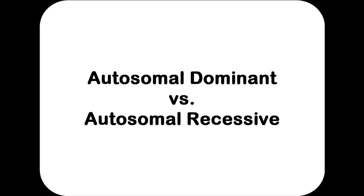In autosomal dominant disorders, the disorder tends to show up in previous generations because a dominant allele causes it. If nobody in the family before you had it, the only other explanation is a mutation, making you the first generation in your family with that disorder. You might think dominant disorders would affect almost everyone, but many people with more severe versions never reproduce, so they don't pass the gene on. Also, even though the allele is dominant, these alleles are very rare within the population.